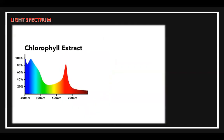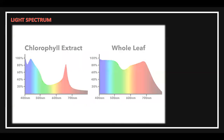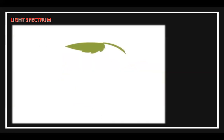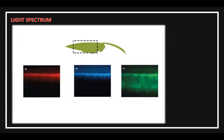Here's the absorbance chart again — this is the chlorophyll extract. Now compare that to what a whole leaf absorbs. You can see that when the structure is intact, the leaf absorbs a lot more green and yellow light. Let's get away from charts and see this in real life. This is a side view of a leaf — you can see that red and blue light barely penetrates the top. However, green light illuminates the entire leaf.